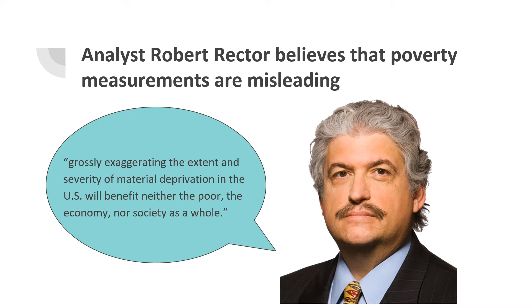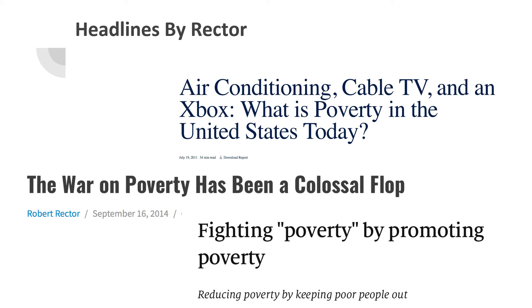Robert Rector believes that our current poverty measurements are misleading, because most people think of poverty as extreme poverty such as starvation or homelessness, but that is not how most poor people actually live. For instance, the poor today lived much better than the poor 50 years ago. Rector has a very cynical view — he believes the war on poverty has been a colossal flop and tries to convince readers that poverty is not that bad, because the average impoverished home often has air conditioning, cable TV, or an Xbox.